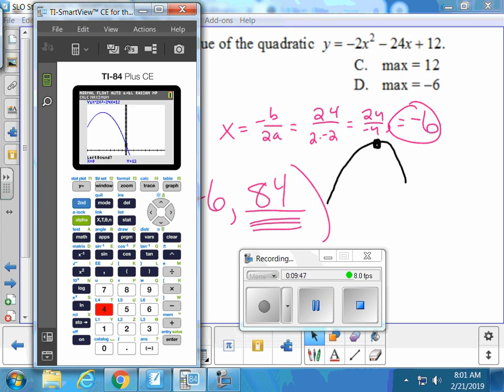You can either trace, use the trace button, and trace along to get close to the vertex. Or you can use your table and scroll around to find your vertex. Or there's even a vertex button. Second, calculate, maximum, number four. Pick a number to the left, maybe negative eight. Pick a number to the right, maybe zero. And enter one last time as the search zone. Negative six, 84.